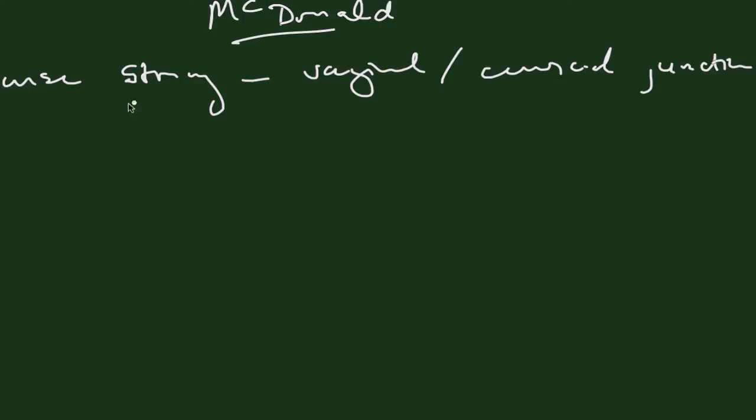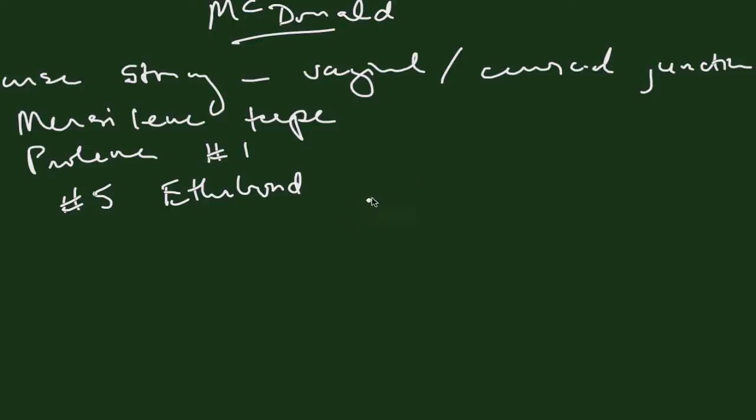The suture material that is used for these is highly variable. Classically, again, Mersilene tape was used to place the Shirodkar or the McDonald cerclage. Nowadays, people will often use Prolene number one. Years ago, I began using a double strand of number five Ethibond. In fact, this has been my choice for about 25 years. A double strand of this gives you about a three to five millimeter width to the cerclage, similar to that obtained with the Mersilene tape.